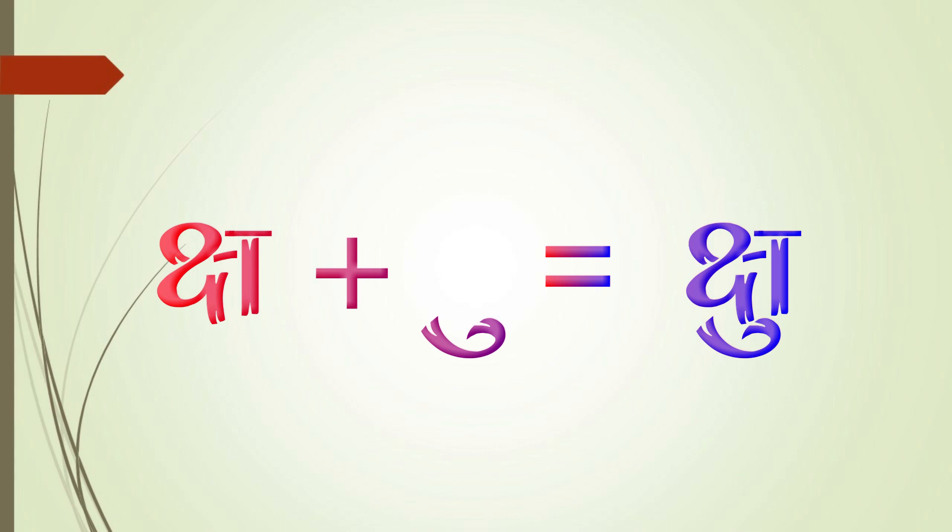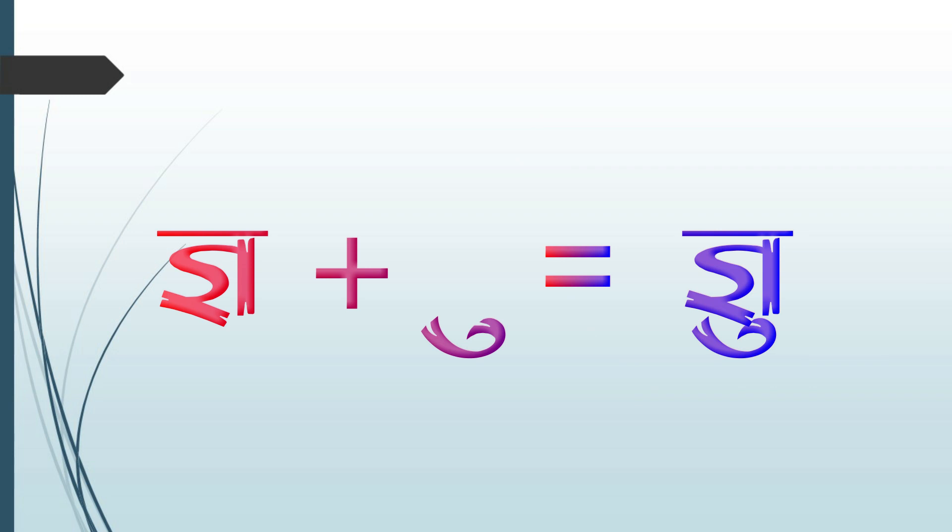ળ આદીકરસ્વ ઉકાર બરોબર ળૂ, ક્ષ આદીકરસ્વ ઉકાર બરોબર ક્ષૂ, જ્ઞ આદીકરસ્વ ઉકાર બરોબર જ્ઞૂ.